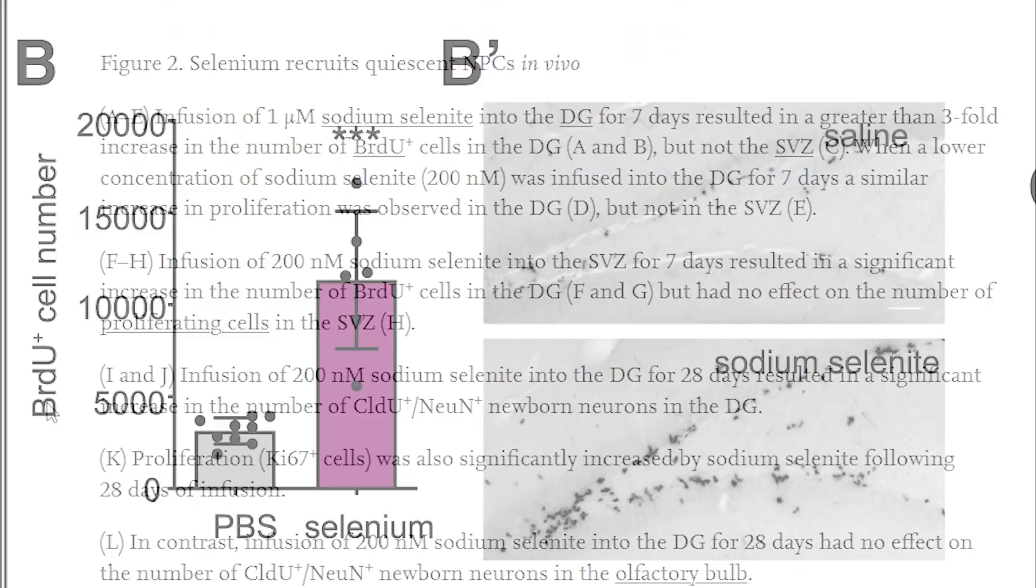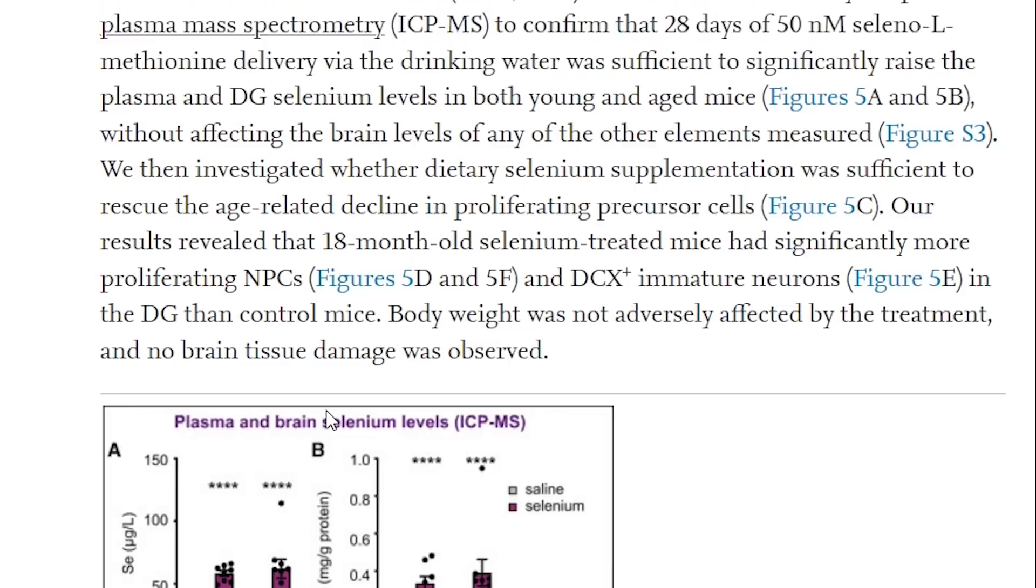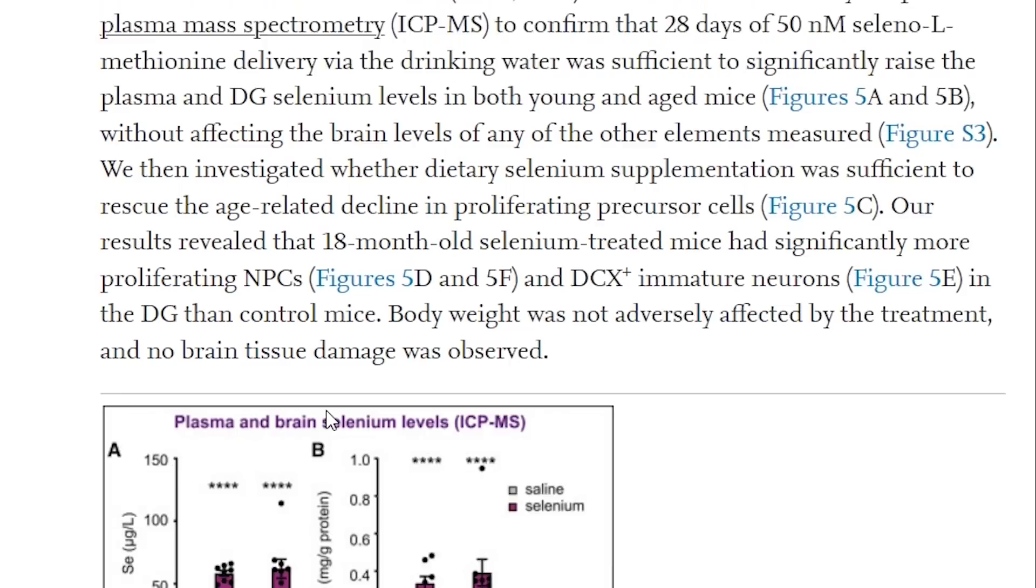So it was therefore validating to see that old mice, here 16 months old, that were given 50 nanomolar selenium in drinking water for eight weeks, performed better in different spatial learning tasks such as the Barnes maze, where mice have to use visual clues to locate the escape chamber.